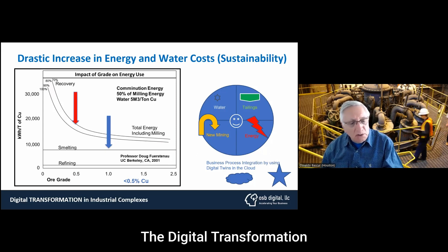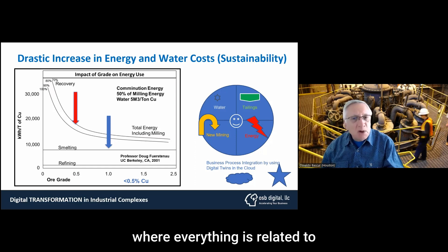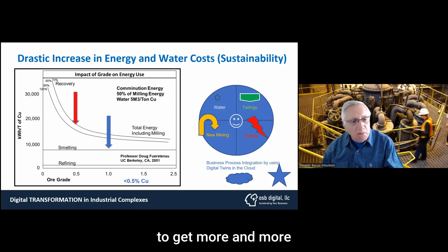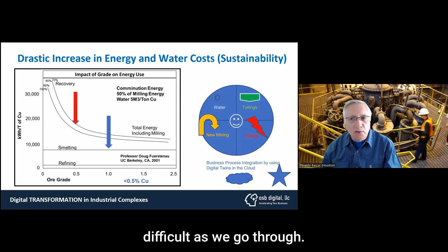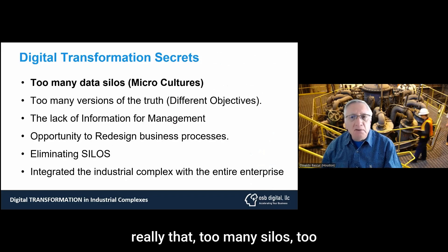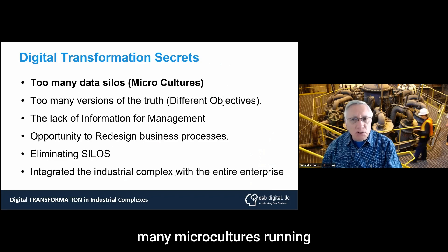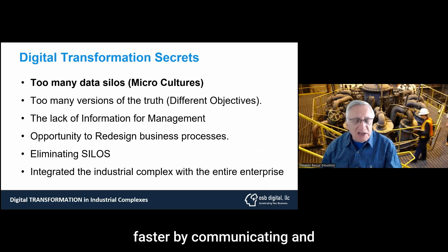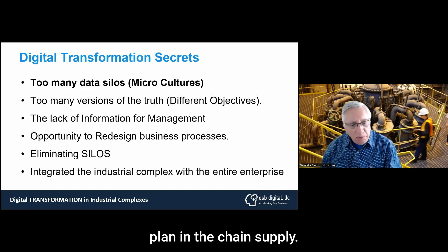We wrote a book called The Digital Transformation in the Process Industries, where everything is related to how to minimize the variance and improve the planning of production when you have these low-grade ores, because they are going to get more and more difficult as we go through. The problem we have here is really too many silos, too many microcultures running with Excel spreadsheets. Information for management is lacking terrifically. So there is an opportunity to redesign the business processes and work much faster by communicating and collaborating for the whole plan in the chain supply.